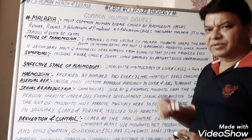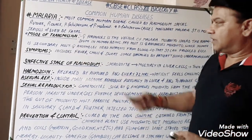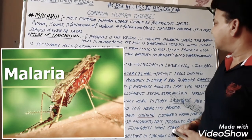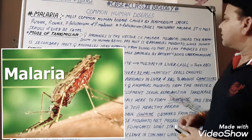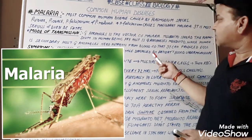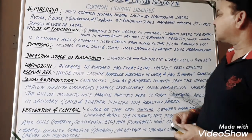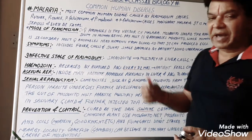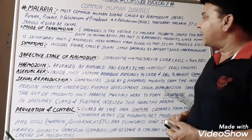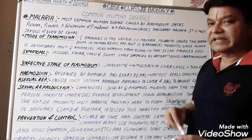Mode of transmission: the female Anopheles mosquito is the vector of malaria. The malaria parasite spreads Plasmodium in human beings. The primary host is the female Anopheles mosquito, while the secondary host is the human being.